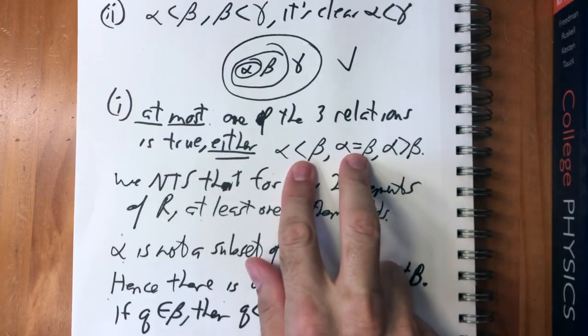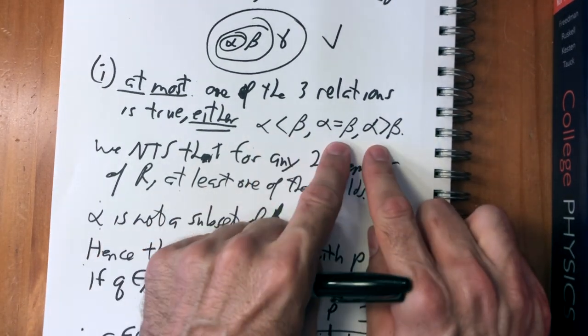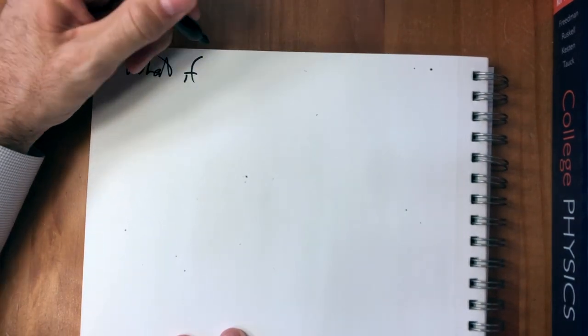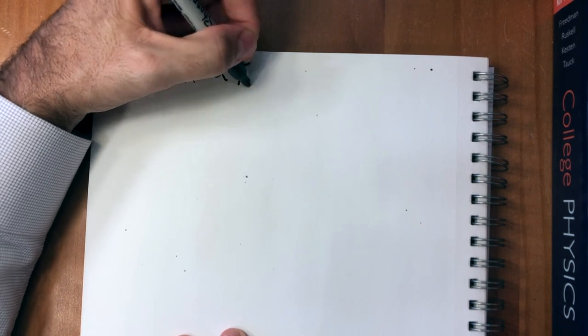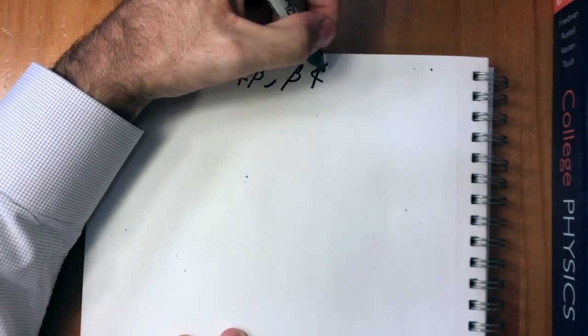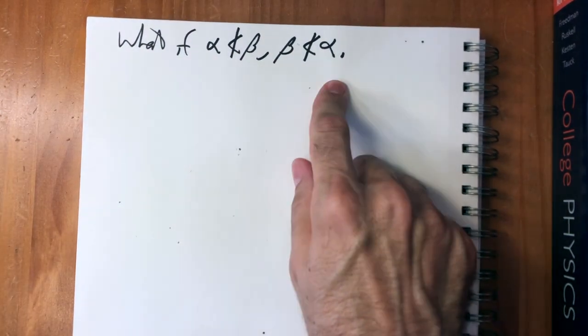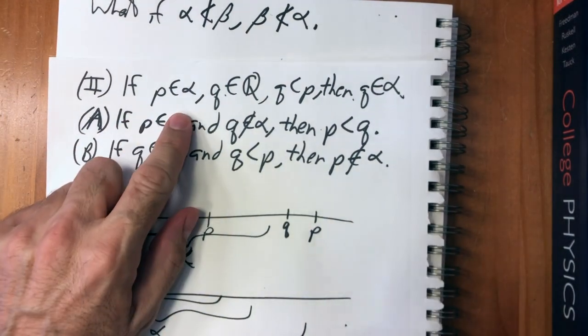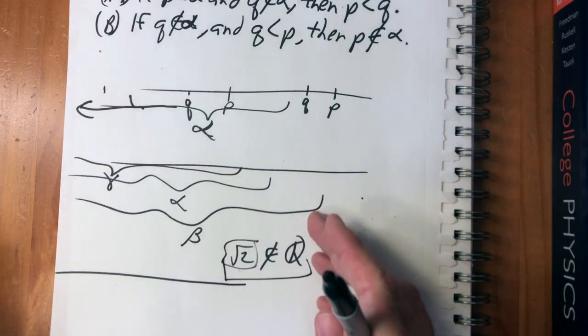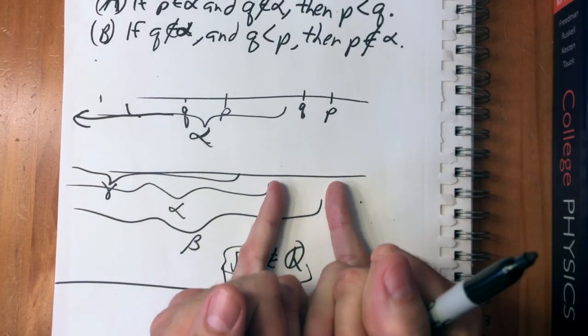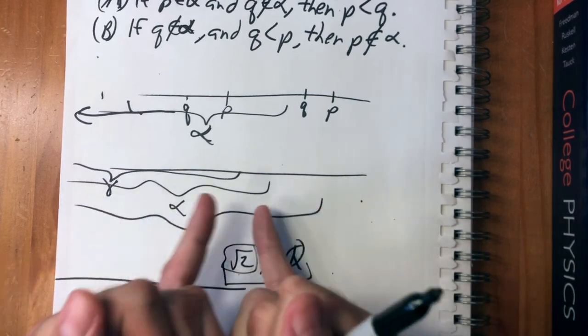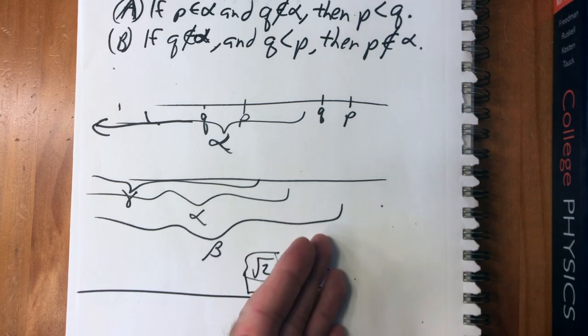So we just showed that if the first two are not true then the third one is true. We still need to show that if neither alpha is less than beta nor beta is less than alpha, then they must be equal. If alpha is not less than beta and beta is not less than alpha, then neither is a proper subset of the other. We know from the structure of cuts that any two cuts — since they all go all the way to the left — one of them has to be a subset of the other, or they share all the same elements.